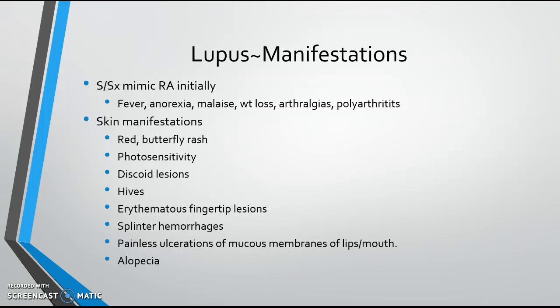However, there are some classic manifestations. One is the red butterfly rash, also called the malar rash (M-A-L-A-R), across the bridge of the nose. Photosensitivity means patients must avoid excessive sun exposure. Discoid lesions are disc-shaped red raised lesions on the skin. Patients may develop hives, erythematous fingertip lesions, and splinter hemorrhages — linear red lines on the fingernails often significant for microemboli. Painless oral ulcerations and alopecia may also occur.